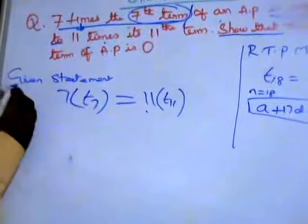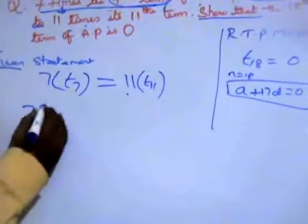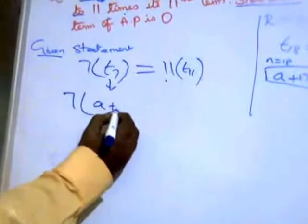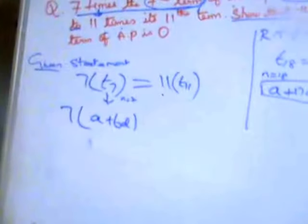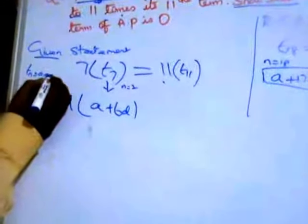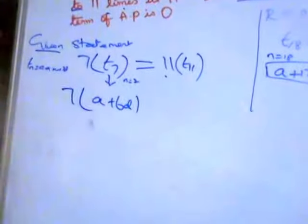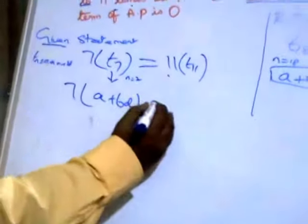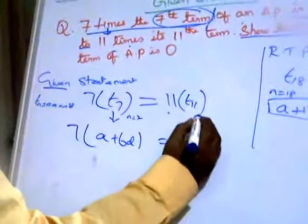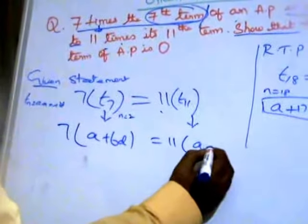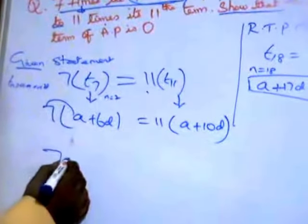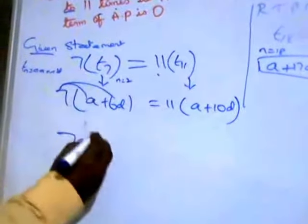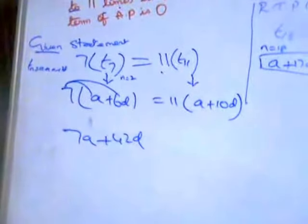When a statement is given, you must use it to prove the result. Now, 7 into T7 — using Tn = a + (n−1)d, with n = 7 — gives 7 into (a + 6d). This equals 11 into T11, which is 11 into (a + 10d). When you multiply out, you get 7a plus 42d.